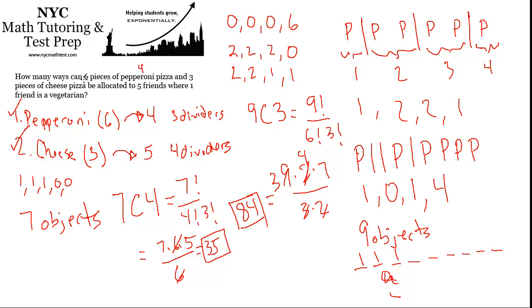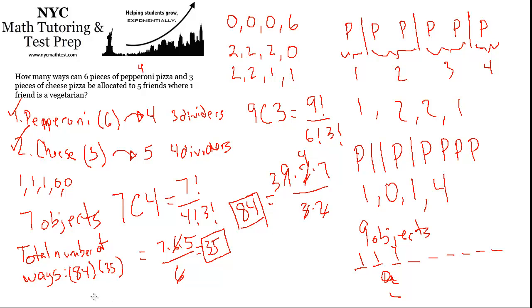To answer the final question — how many ways can six pieces of pepperoni and three pieces of cheese pizza be allocated to five friends where one is a vegetarian? The 84 represents the allocation of pepperoni, and the 35 represents the allocation of cheese pizza. For each of the 84 possibilities, we match those with each of the 35 possibilities. By the fundamental counting principle, we multiply: 84 times 35 equals 2,940 ways in total.